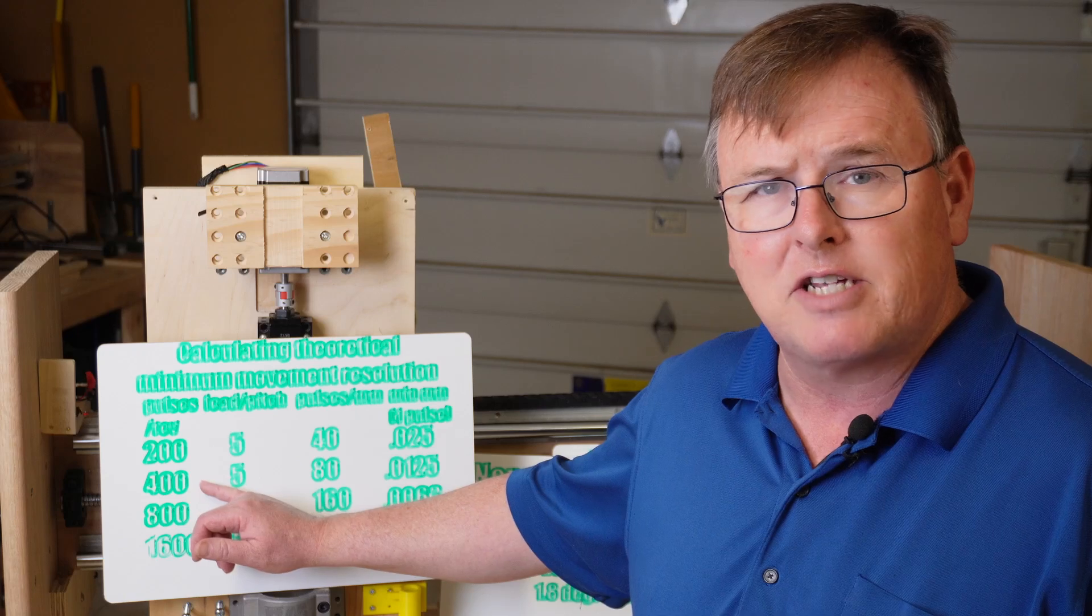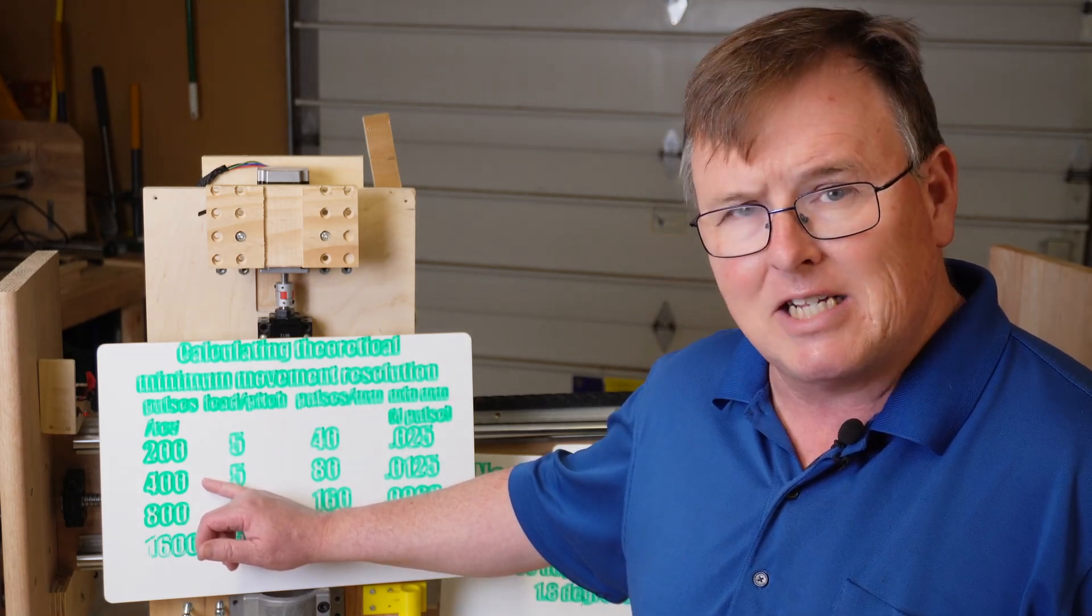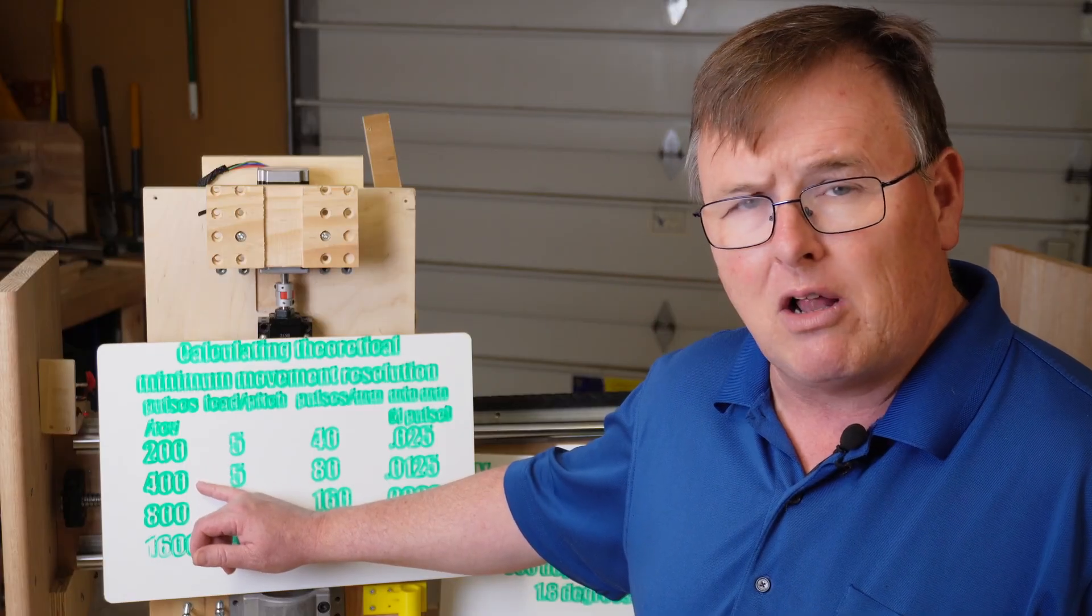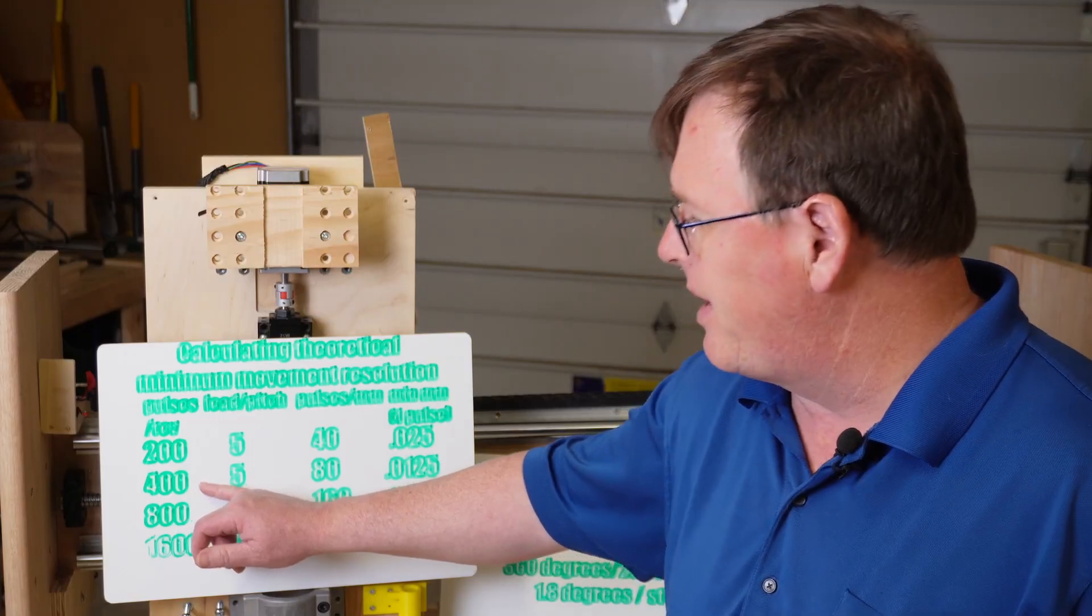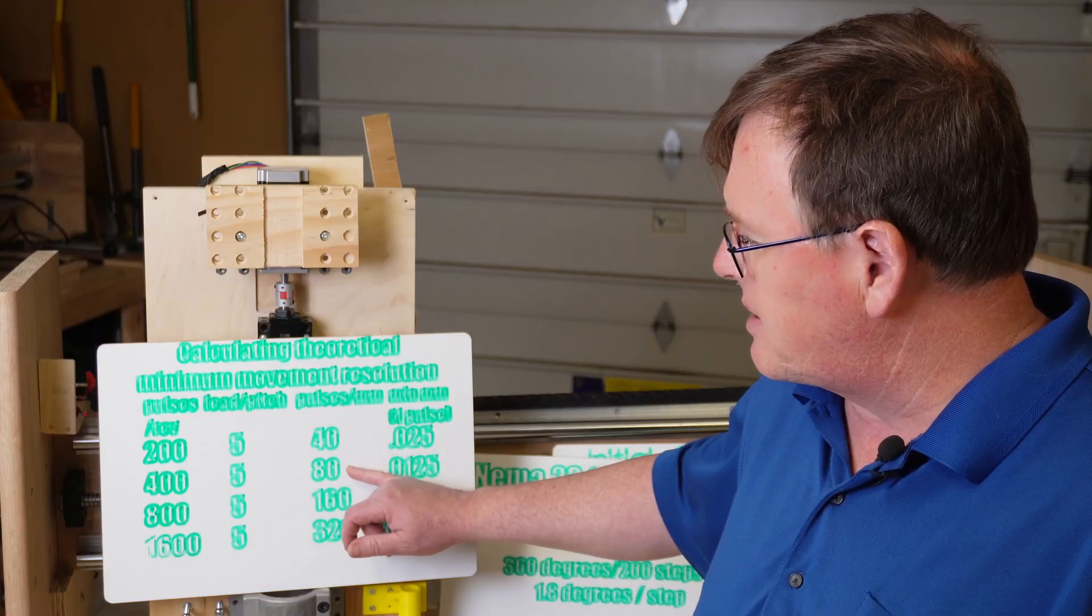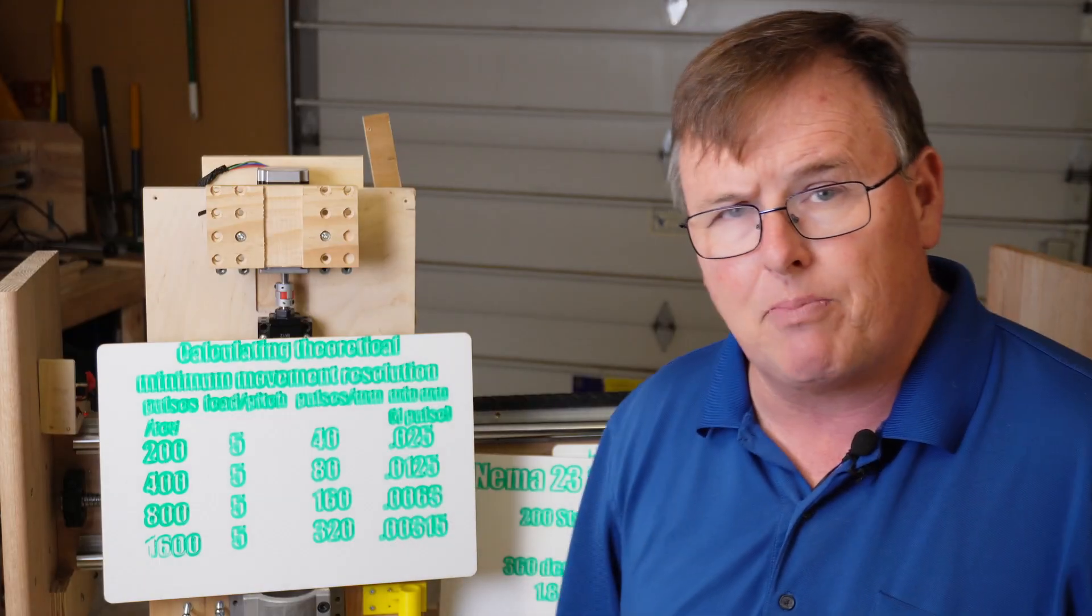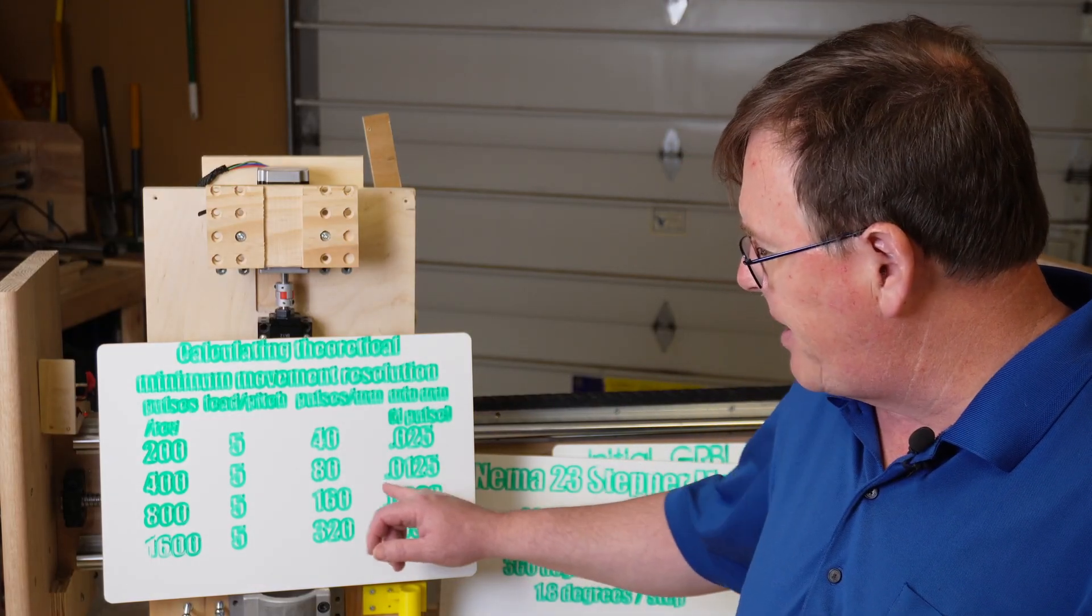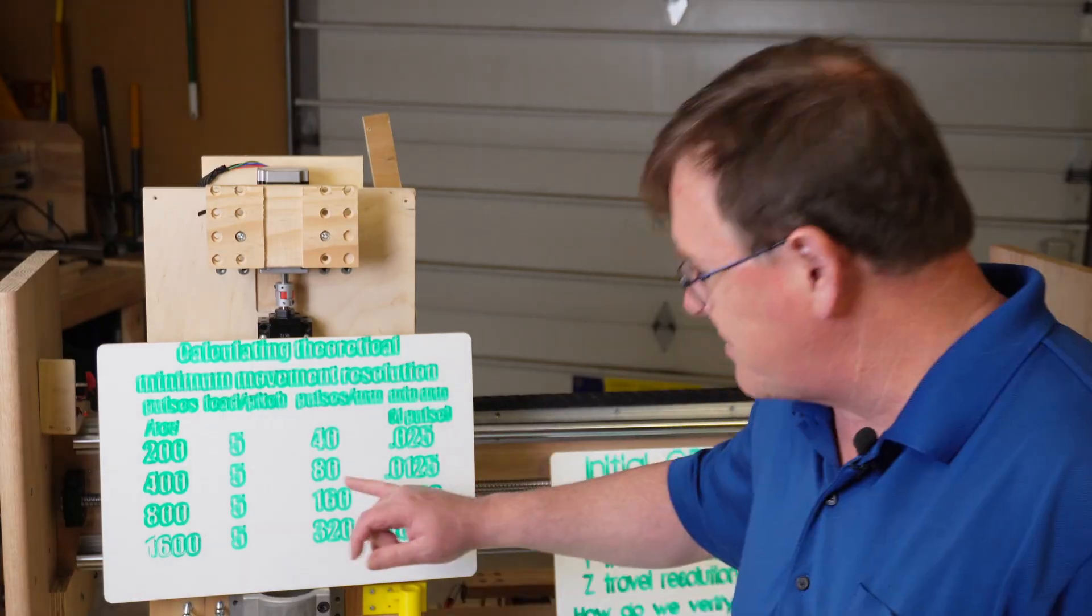Let's make it so that our stepper motor driver sends 400 pulses per revolution. In other words, it is tricking our stepper motor into doing what we call half steps. 2 times 200 is 400. This is half steps. The pitch of our lead screw is still 5. That means it's going to take 80 pulses to move a millimeter. 1 divided by 80, that means the best resolution we could possibly have is just a little bigger than a hundredth of a millimeter, 0.0125 millimeters. That's not bad, but you would probably still be able to definitely pick that up with your eye.